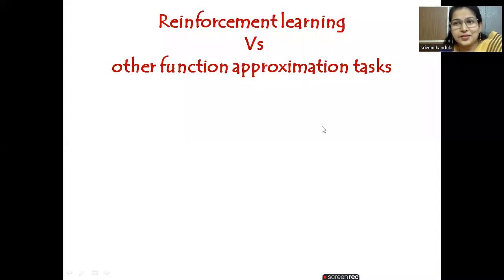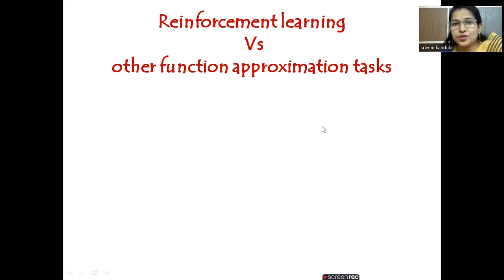Hello everyone, welcome back to the machine learning sessions. This is a continuation topic. In the earlier sessions we have seen what reinforcement learning is, and also we have seen an example for reinforcement learning which is Q-learning, where we solved a numerical example. So now we are in a state to compare reinforcement learning with the other approximation tasks from earlier units, and also we will see what are the limitations of reinforcement learning.